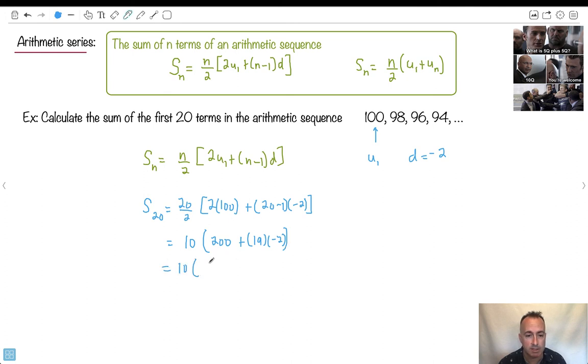Keep going then. So it's 10 times, let's see, this is 200. And what's 19 times 2? That's 38. But I have to do minus 38. All right. So that means, let's see, what's 200 minus 38? That's 162. Yeah. And then 10 times that is just 1620. So there we go. I've got my answer. My 20th, my sum of the first 20 terms is 1620. So that should work. If I did it on my calculator and actually added them up, I'd say this was actually pretty fast. So this formula is actually quite useful.